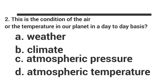Number 2: This is the condition of the air or the temperature on our planet on a day-to-day basis. A. Weather. B. Climate. C. Atmospheric pressure. D. Atmospheric temperature.